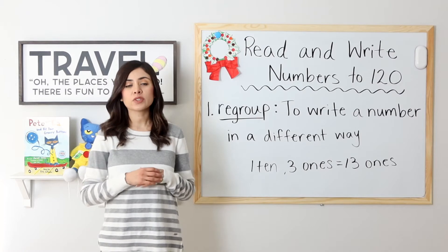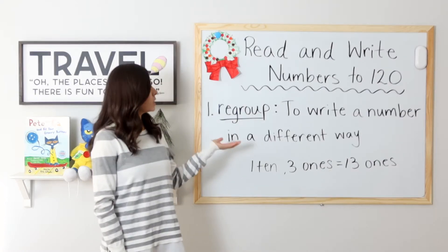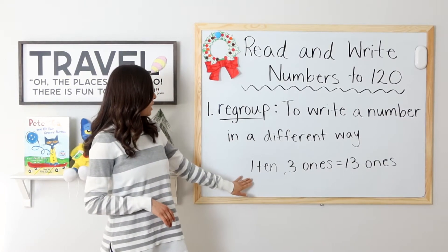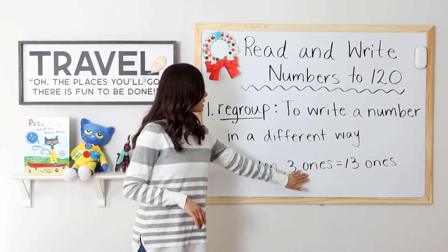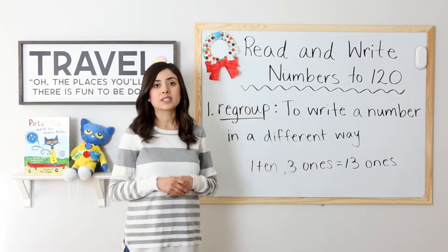Before we get into the lesson, let's review some vocabulary. Regroup. Regroup is to write a number in a different way. So if I have one 10 and three ones, I can group these together to make 13 ones.